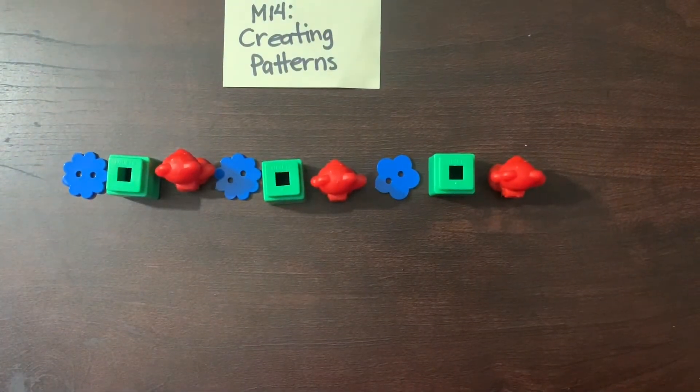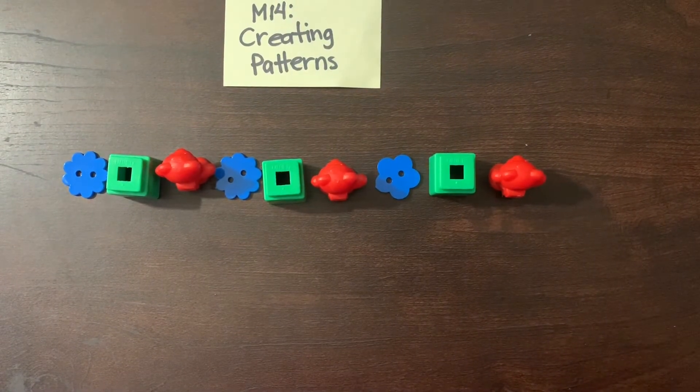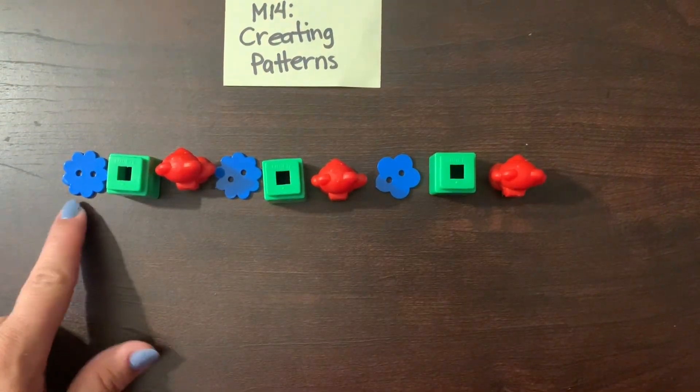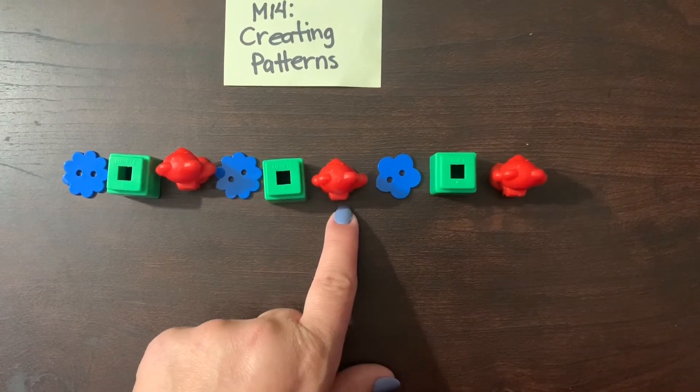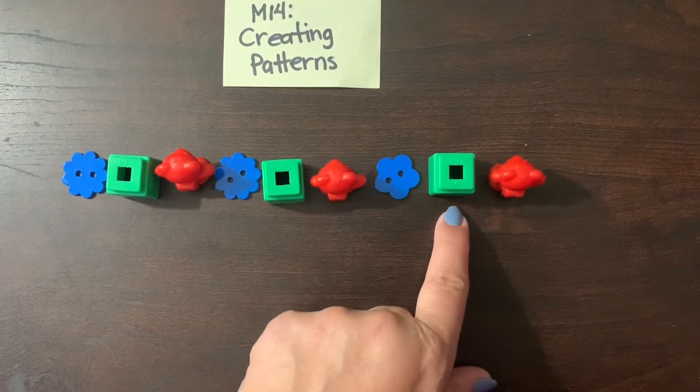So you did an ABC pattern with Miss Evie. Let's say it out loud again. Button, cube, bear. Button, cube, bear. Button, cube, bear.